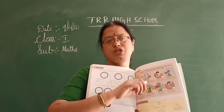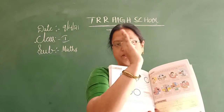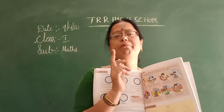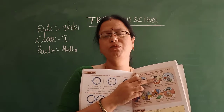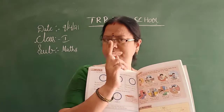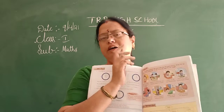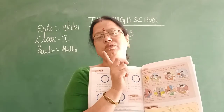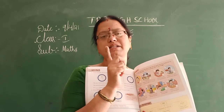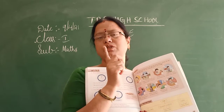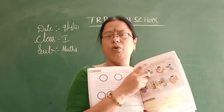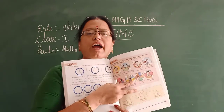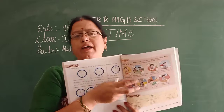The short hand always shows you hours. After 60 minutes it will move, but the long hand moves every minute. The minute hand moves, and the hour hand moves only after 60 minutes. So the big hand shows minutes and the small hand shows hours.